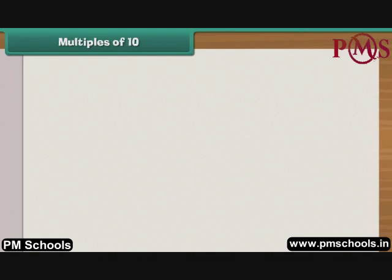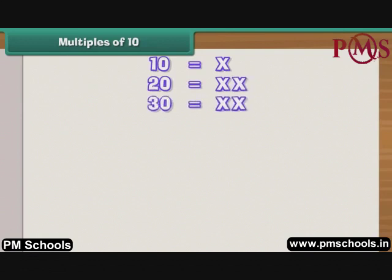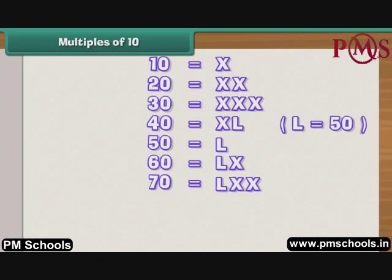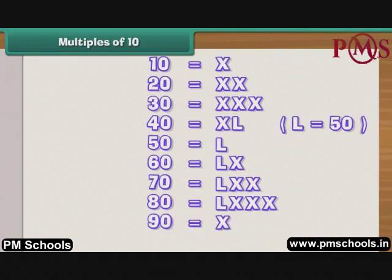Multiples of 10. We have seen that 10 is written as X and 20 as XX. By the same logic, 30 is XXX, that is 3 tens. 40 is read as 10 less than 50, hence it is written as XL, where L stands for 50, and 50 is L. Similarly, 60 is LX, 70 is LXX, 80 is LXXX. 90 is 10 less than 100, so it is written as XC, where C stands for 100, and 100 is C.